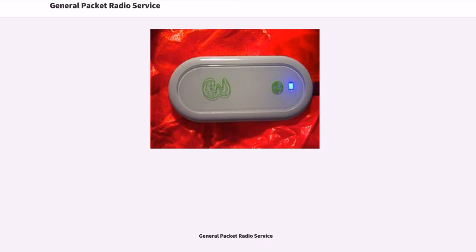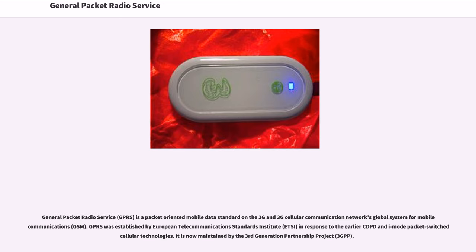General Packet Radio Service, GPRS, is a packet-oriented mobile data standard on the 2G and 3G cellular communication network's Global System for Mobile Communications, GSM. GPRS was established by the European Telecommunications Standards Institute, ETSI, in response to the earlier CDPD and iMode packet-switched cellular technologies. It is now maintained by the 3rd Generation Partnership Project, 3GPP.